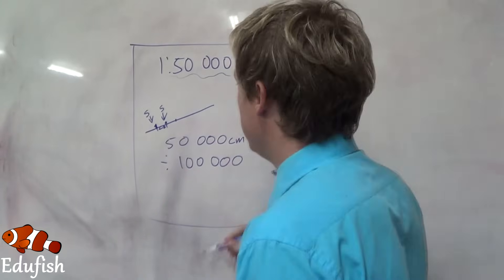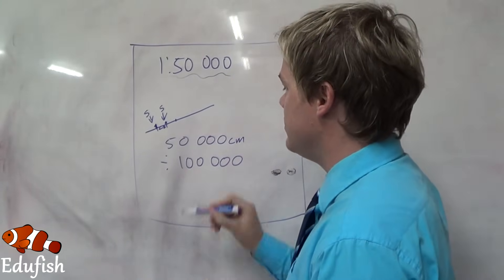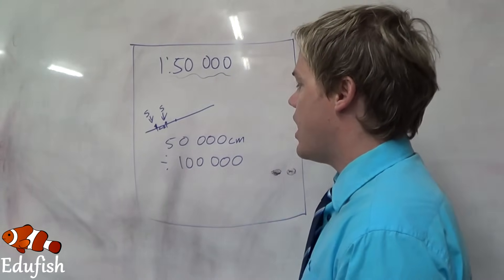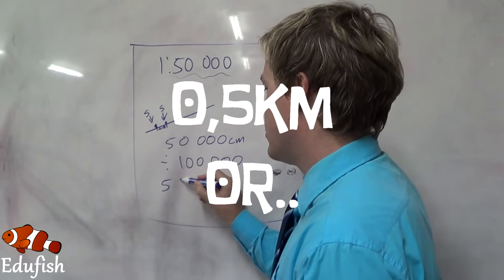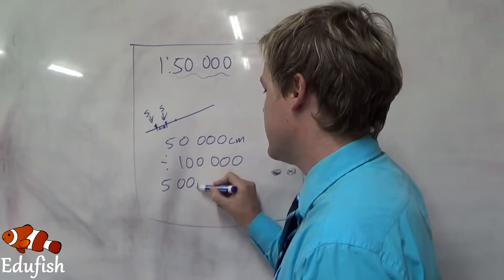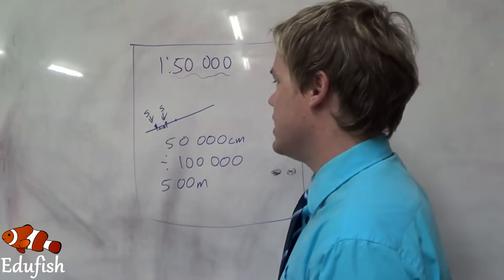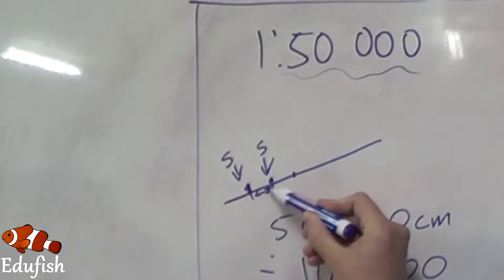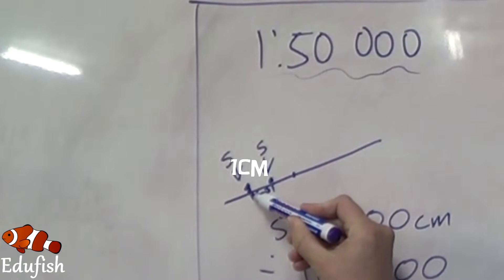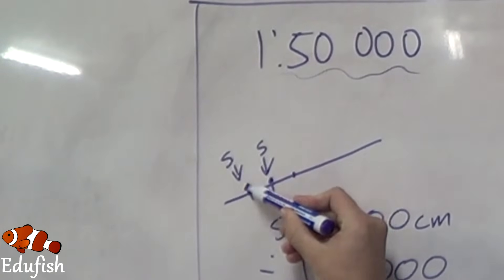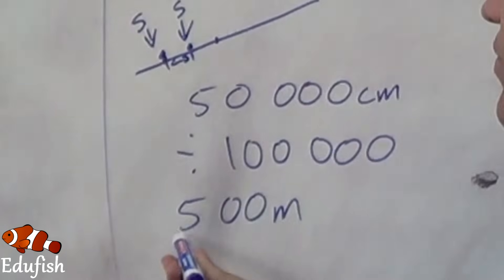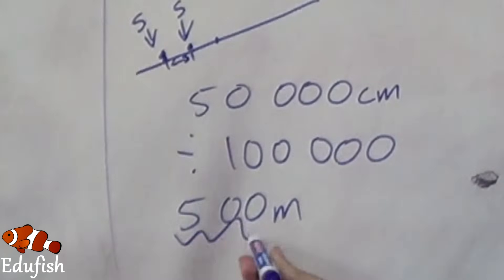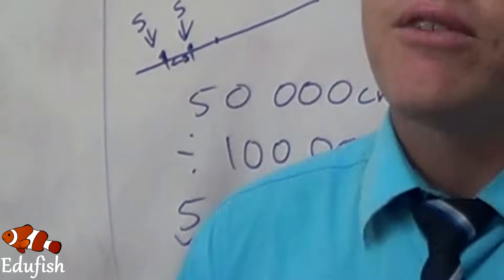If we divide 50,000 cm by 100,000, it gives us an answer of 500 meters. So in other words, this little distance you see on your map from one shop to the other represents 500 meters in real life.